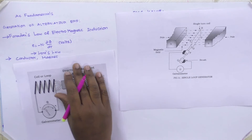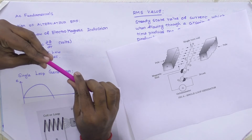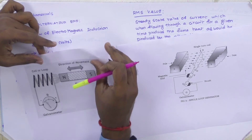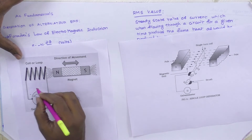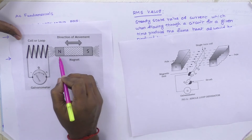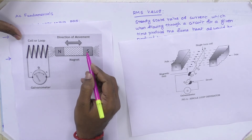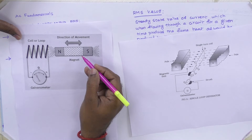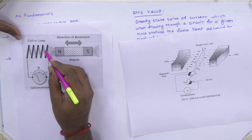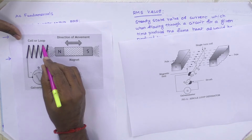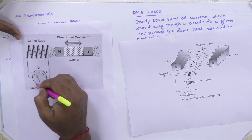Now we see how alternating EMF is generated. The EMF is generated based on the basic principle of Faraday's laws of electromagnetic induction. Here we have a coil or loop and a magnet with a north pole and south pole. When the conductor is stationary and the magnet moves towards the coil, the flux linkages around the conductor vary, and EMF is induced in that coil, as indicated by the galvanometer.